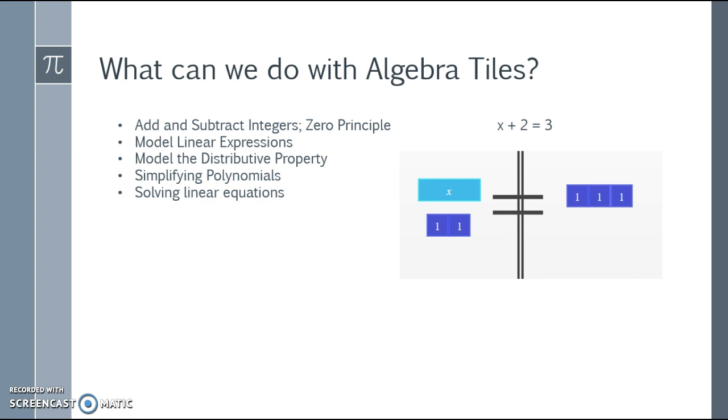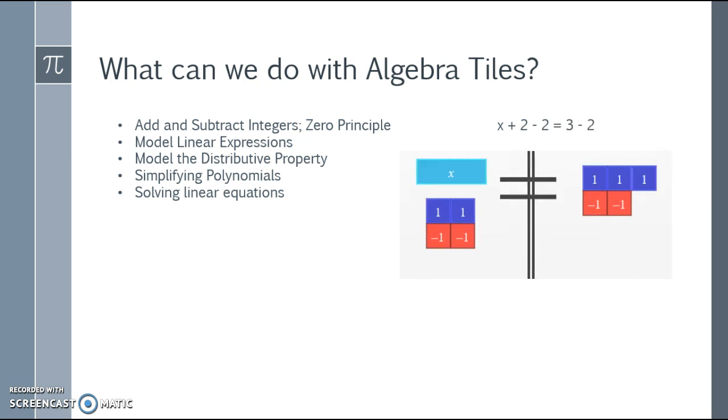I can also solve linear equations. On the left I have x plus two equal to three. If I want to get my x value by itself, we know that what we do to one side we have to balance by doing to the other. So if I wanted to get x by itself, I know that I need to subtract two from the left, which means that I have to subtract two from the right.